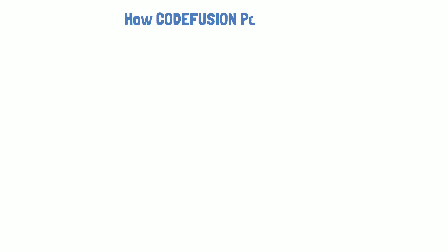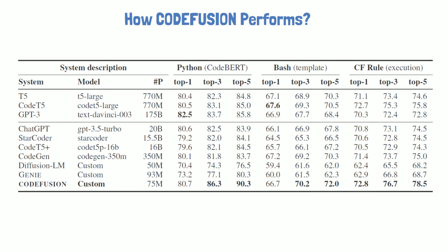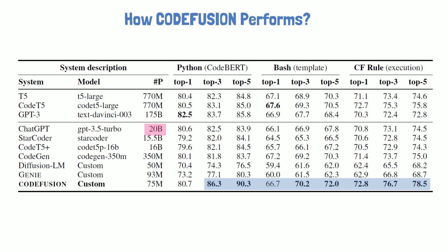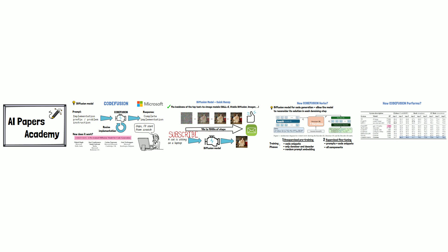So how does CodeFusion perform compared to other models? We can see the answer in the following table from the paper. Each row represents a different evaluated model, and CodeFusion results are reported in the bottom row. When tested over a Python benchmark, only GPT-3 was able to get better results than CodeFusion in the top-1 accuracy metric. But GPT-3 is orders of magnitude larger than CodeFusion, so this is still very impressive. CodeFusion is also on par with ChatGPT. An interesting side note is a possible leak from Microsoft regarding the size of ChatGPT, which is mentioned here to be 20 billion parameters. On the top-3 and top-5 metrics, CodeFusion was able to beat all other tested models in Python, Bash, and CF rules, which are the Excel conditions. Overall, given that CodeFusion is much smaller than other strong code models, results are very impressive and show great potential for this research direction. Thank you for watching and stay tuned for more reviews of AI papers.